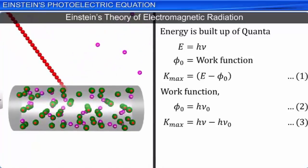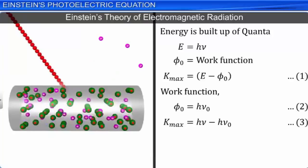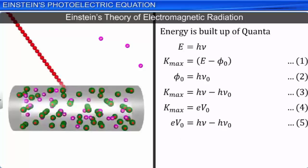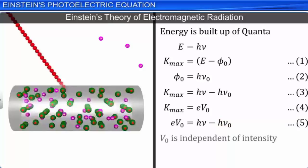If V₀ is the stopping potential for a certain frequency ν of the incident radiation, the maximum kinetic energy K_max is equal to eV₀ — let this be equation 4. Substituting equation 4 in equation 3, we have eV₀ = hν − hν₀ — let this be equation 5. We observe from equation 5 that the stopping potential V₀ is dependent on the frequency ν of the incident radiation, since hν₀ is constant for a given metal surface. However, the stopping potential V₀ is independent of the intensity of the incident radiation, similar to the maximum kinetic energy.